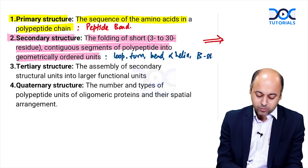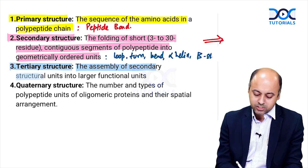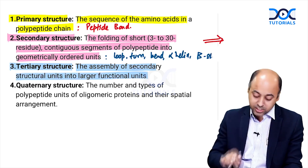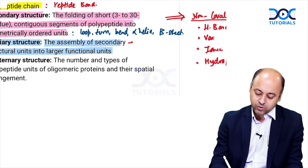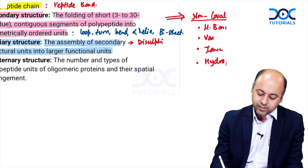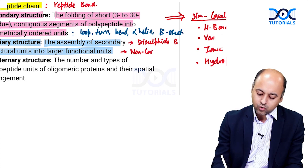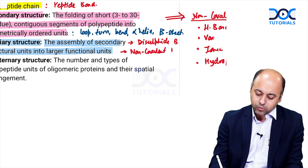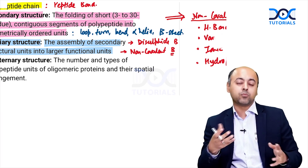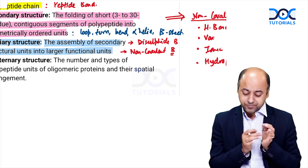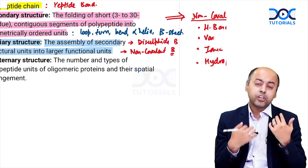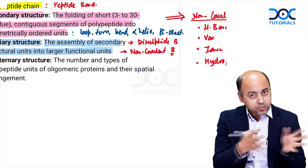Tertiary structure is the assembly of all the secondary structures into a larger functional unit. Here we have two types of bonds: disulfide bonds, which are covalent in nature, and non-covalent bonds. Non-covalent bonds are by far the more numerous and are responsible for holding the tertiary structure together; at some places we can also have the disulfide bond.